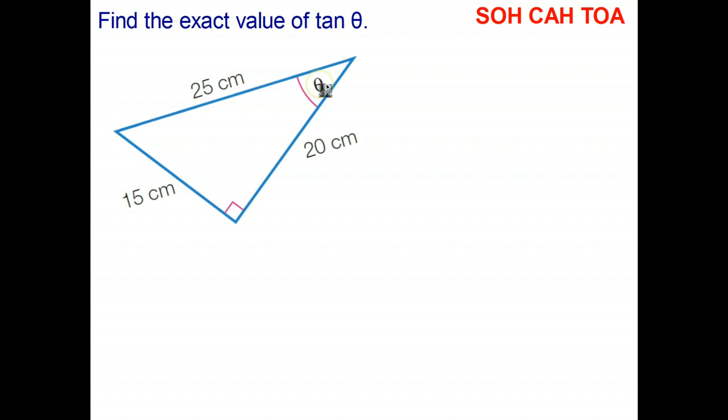So opposite the right angle is the hypotenuse, so I put a capital H just there. Opposite the angle we're interested in, or the angle we know, is the opposite side, so the opposite side is 15 centimeters.